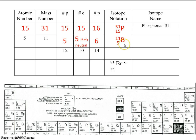So we can write it like this. And the isotope name would be boron-11.